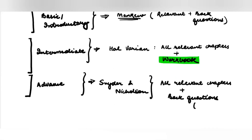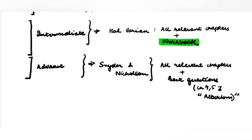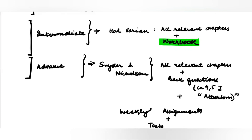For example, when we did chapters 4 and 5 recently, I told you to do the back question related to altruism. This is not covered in detail in the book — there is just a paragraph on it — but there is a very good question with a beautiful utility function given there. So back questions are very, very important. Plus, all assignments, weekly assignments, plus the tests given on a bi-weekly basis.